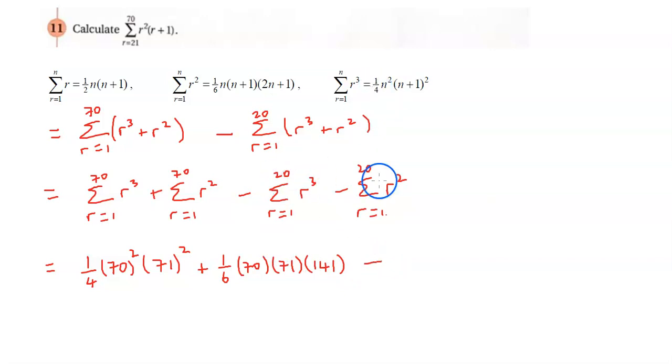Minus, let me do the same thing again, 1 quarter times 20 squared this time, times 21 squared and minus 1 over 6 times 20 times 21 times 41.